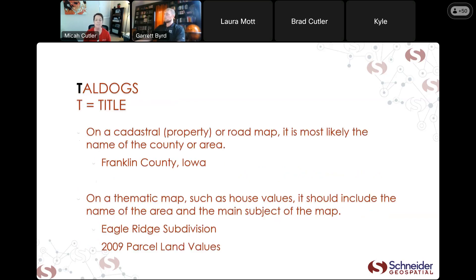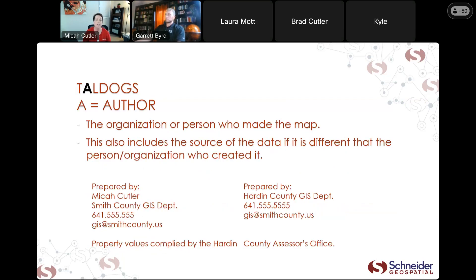The first element is Title. In the most concise possible way, indicate what the map is showing — whether it's a theme, a location, or a little bit of both. Make sure your title is as informative as possible with the fewest words. Don't assume your map readers understand — you want your map to stand on its own without you there explaining it.